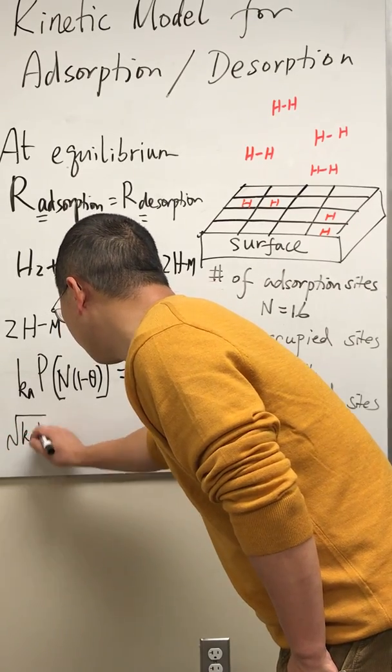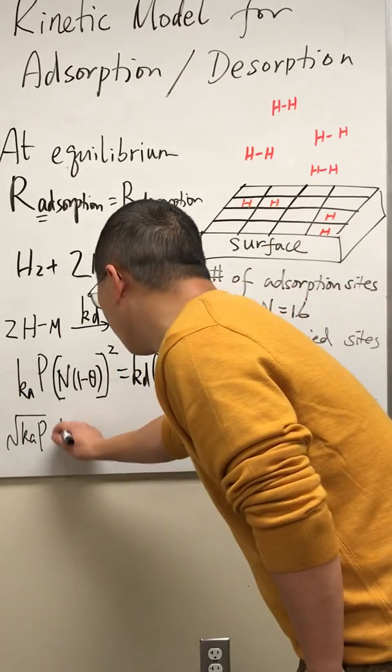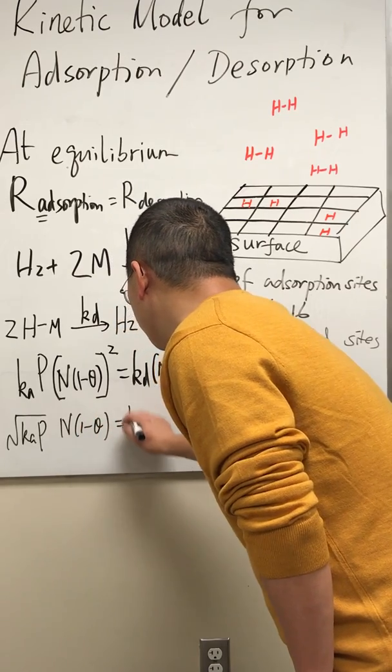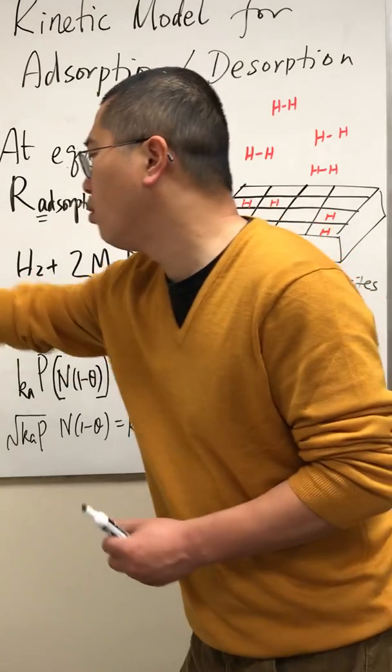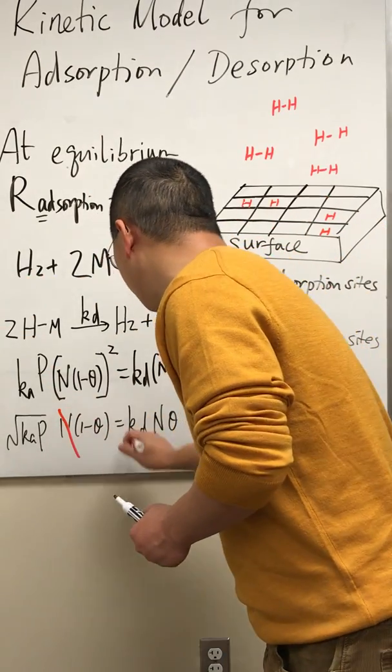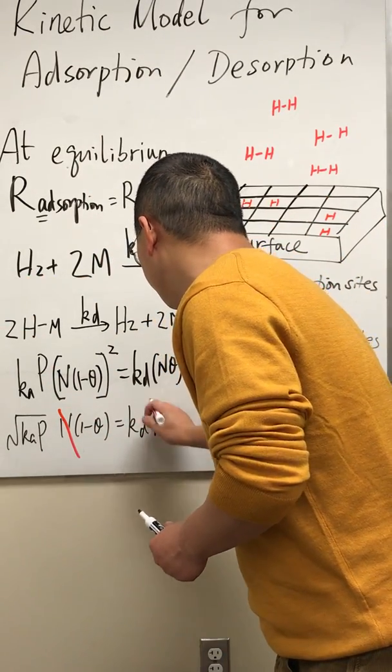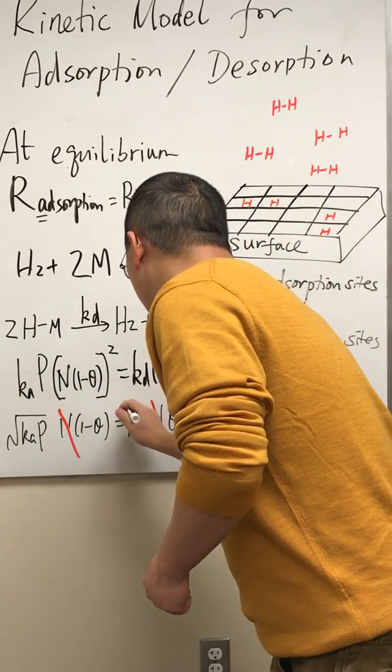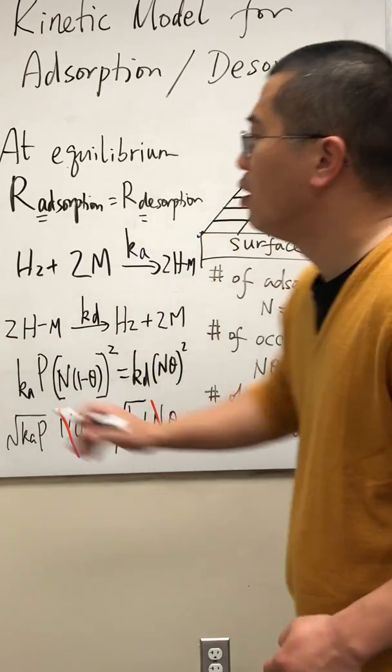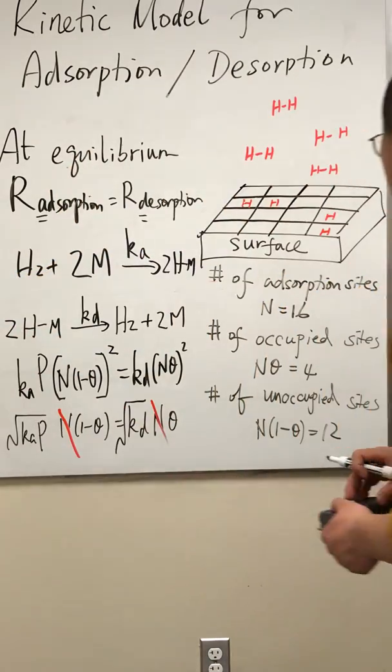Okay, that's the pressure times N times one minus theta equals kd times N times theta. And we notice this N and this N and this N cancel. Very good.